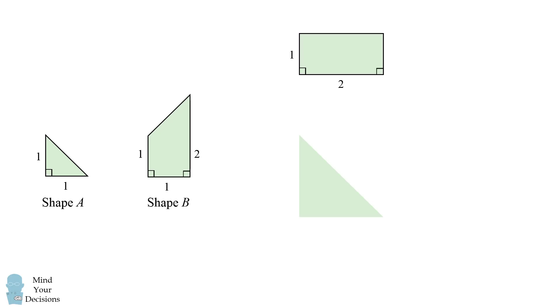Another shape that we can form is this 1 by 2 rectangle. We'll start out with our two shapes and now let's rotate shape B and then join the two shapes together. This forms this rectangle.